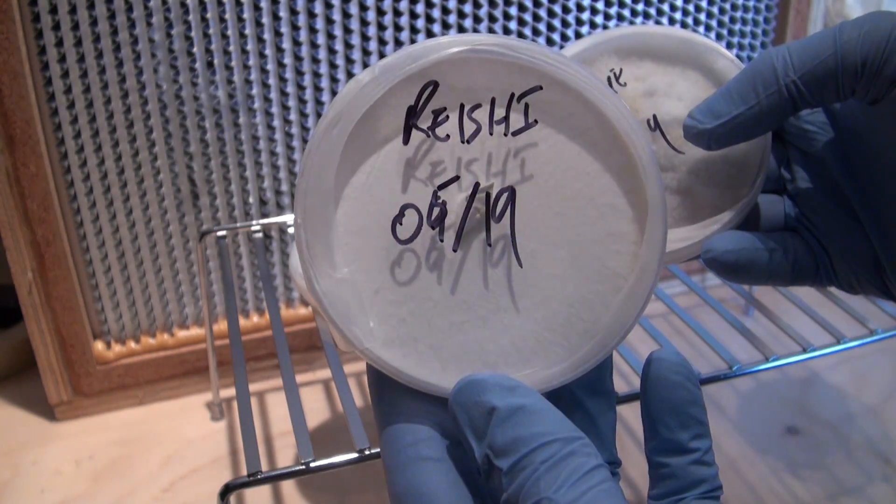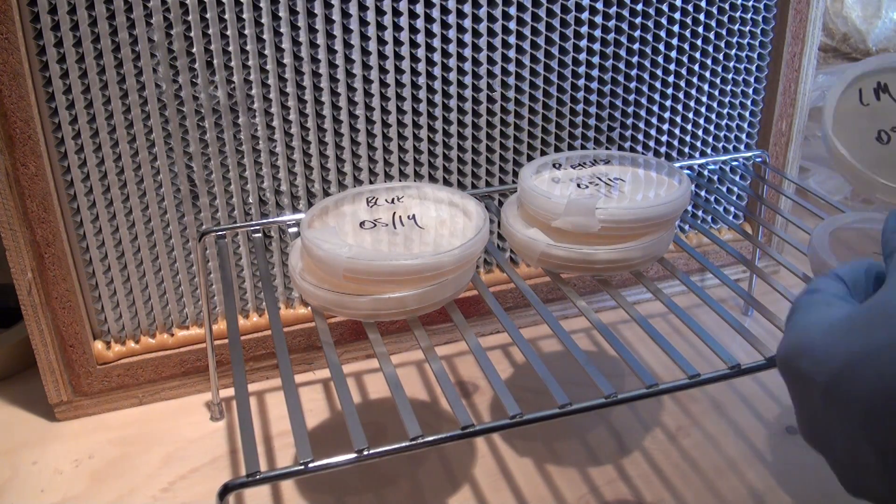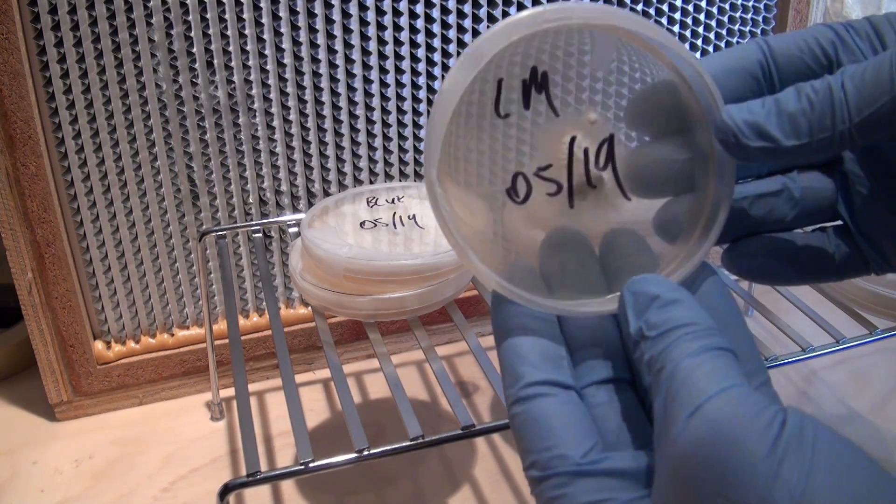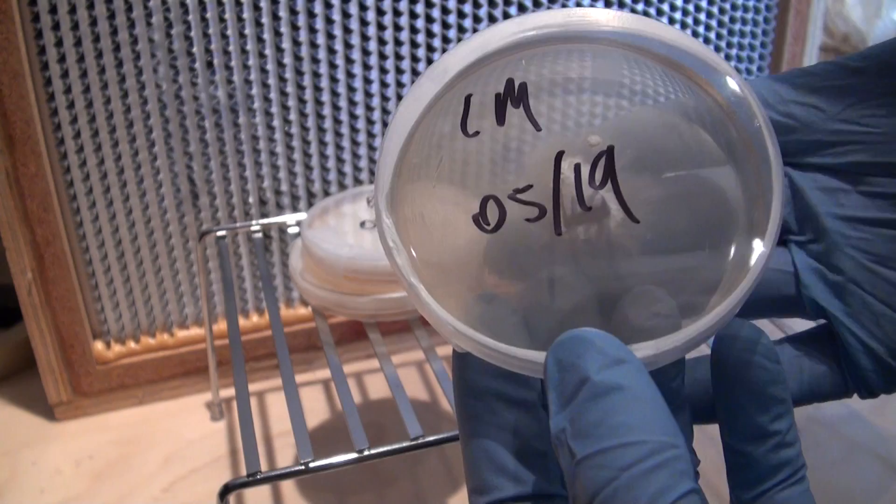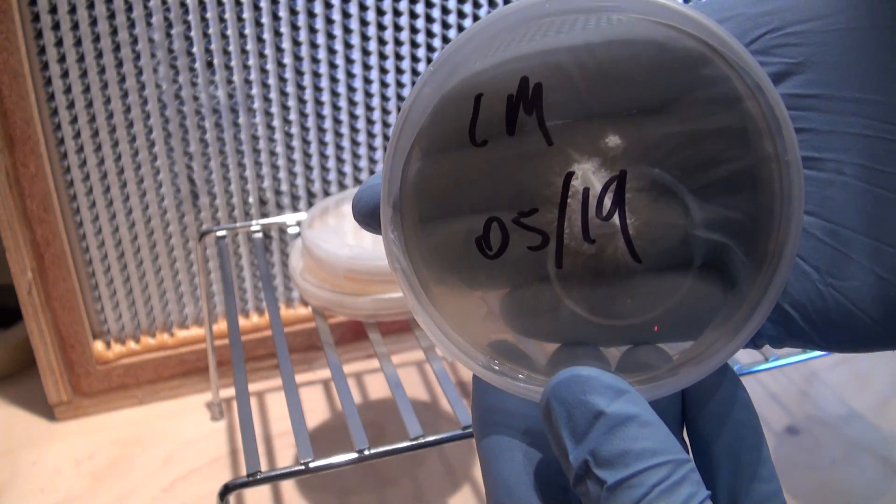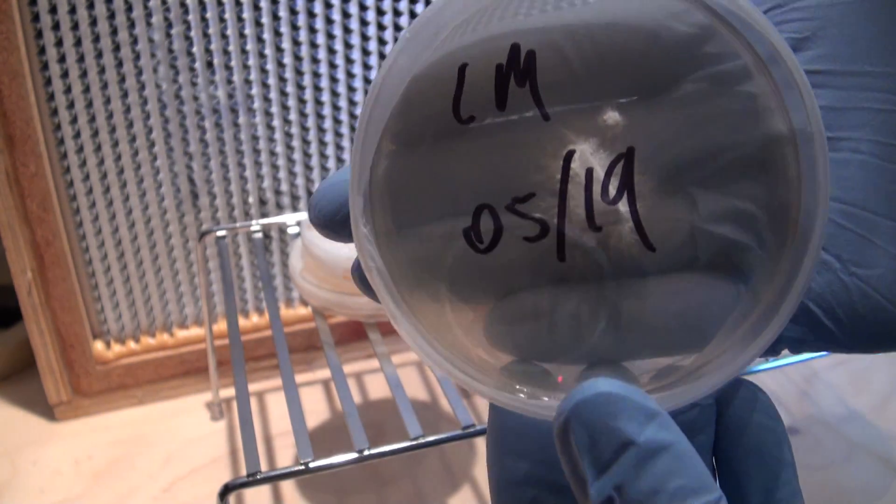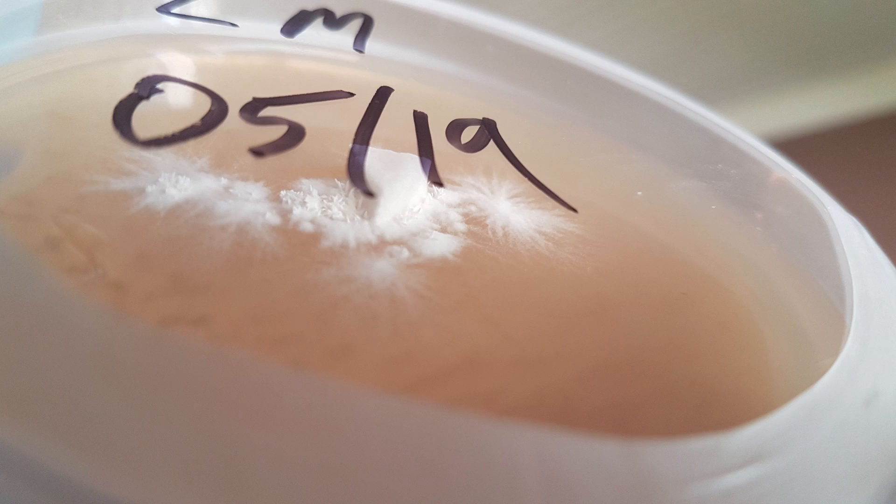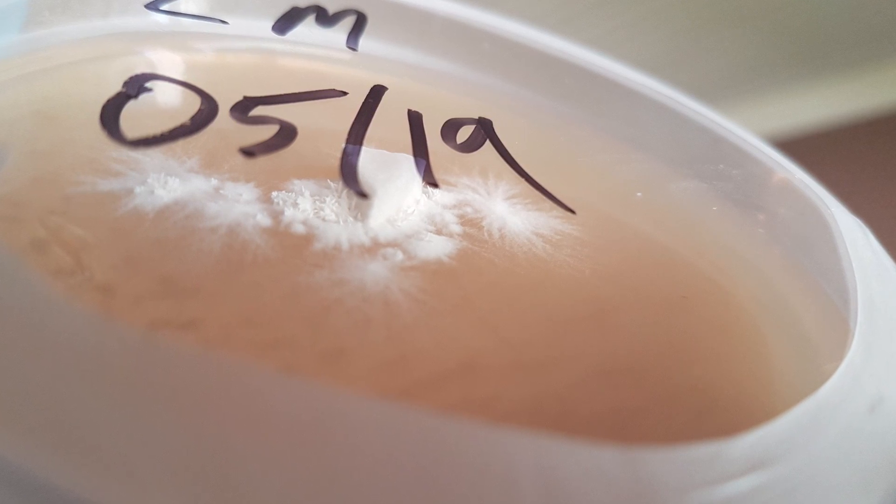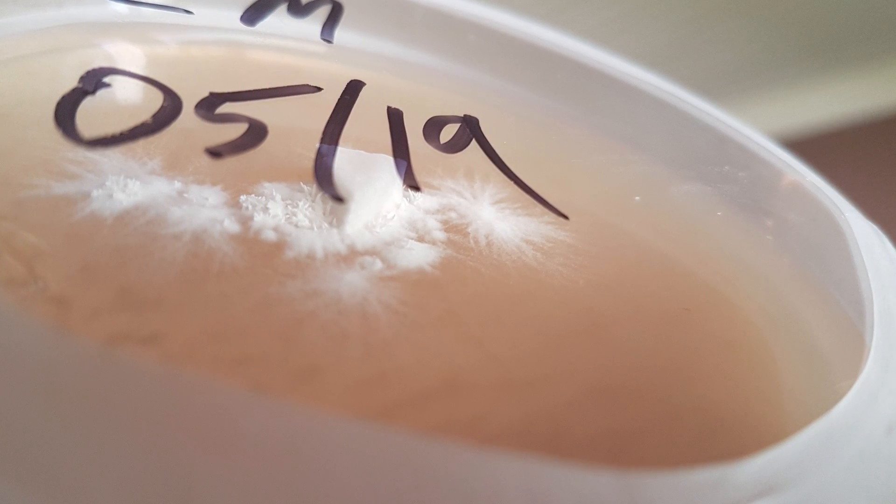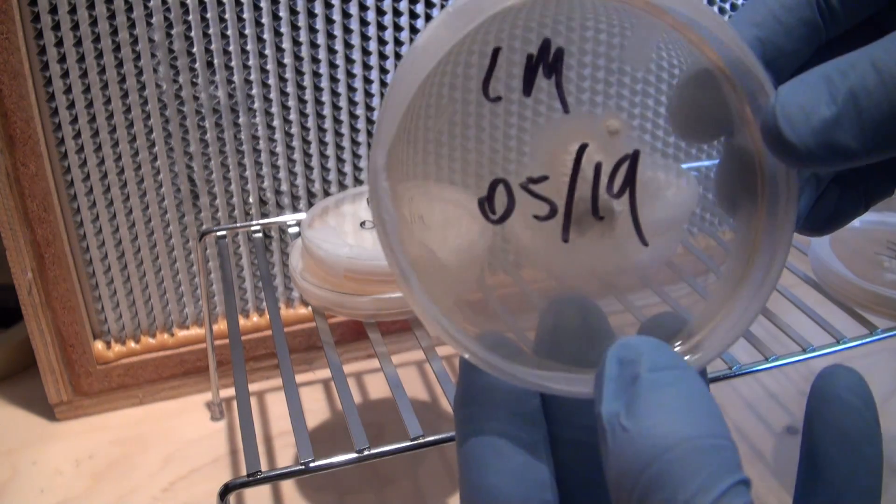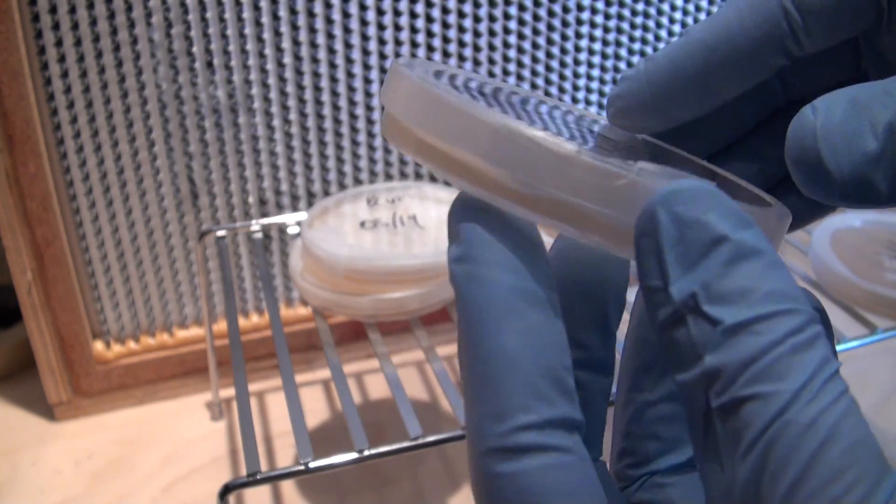Now for something completely different, this is some lion's mane mycelium. The lion's mane is obviously a lot slower growing. You can barely see that it's moved throughout the dish at all. Lion's mane grows these little glacier-like formations but doesn't grow necessarily straight out like the other myceliums. It'll grow straight up off the wedge and form these little glacier-like formations.